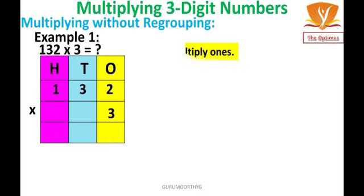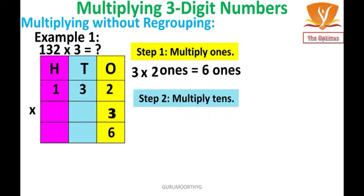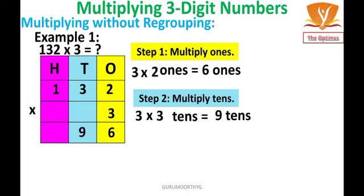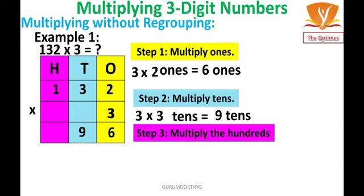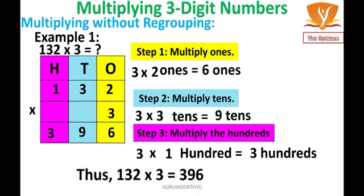Step 1 — Multiplying 1's: 3 × 2 ones = 6 ones. I am going to write 6 in the 1's place. Step 2 — Multiply 10's: 3 × 3 tens = 9 tens. I am going to write 9 in the 10's place. Step 3 — Multiply the 100's: 3 × 1 hundred = 3 hundreds. I am going to write 3 in the 100's place. Thus, 132 × 3 = 396.